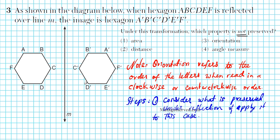What kind of isometry is a line reflection? Isometry basically means that the measurements are unchanged. When you reflect something about a line, it's an isometry because the measures do not change. Now, orientation basically refers to the order of the letters when you're reading the vertices of the shape, either clockwise or counterclockwise. In this problem, ABCDEF — the vertices are read in a clockwise fashion. That's the orientation of the vertices.